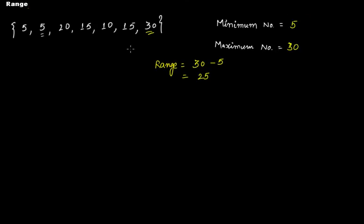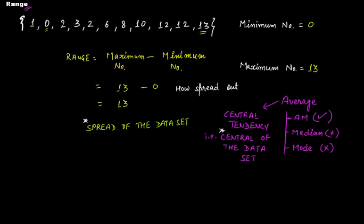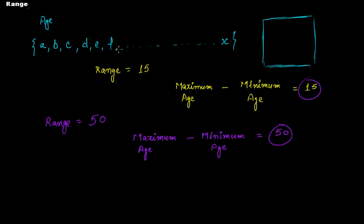So this 50 versus 15 — the range gives you an idea of what age group of people are present in that room, and what the spread of ages is. While in the numerical examples you were aware of the actual data set values, in the room example you only had arbitrary variables and the range itself. Just from the range alone, you can conclude about the age difference — that's what spread means: how spread out your data set is.